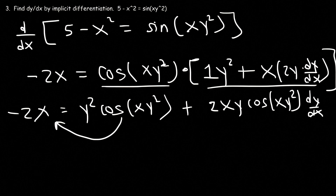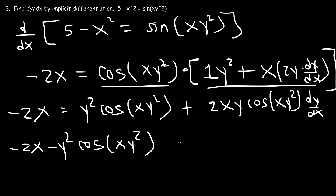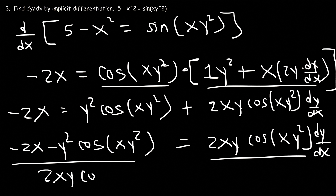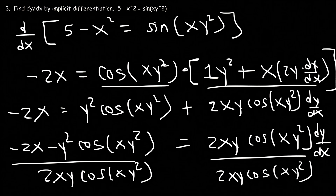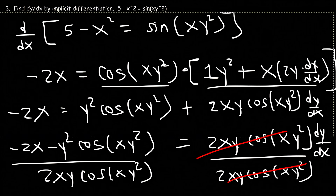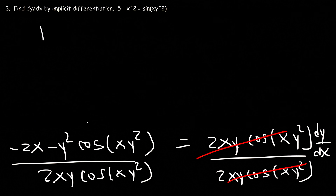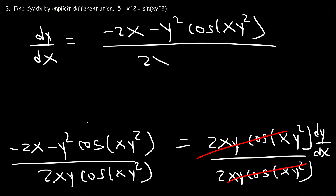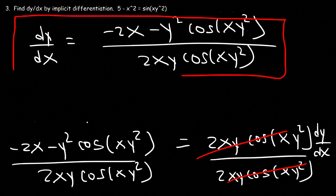I'm going to take the y squared cosine term and move it to the other side. So I have negative 2x minus y squared cosine(xy²), and that equals 2xy cosine(xy²) times dy/dx. The last thing I need to do is divide both sides by 2xy cosine. So the final answer is negative 2x minus y squared cosine(xy²), divided by 2xy cosine(xy²). That's how you use implicit differentiation with trigonometric functions.